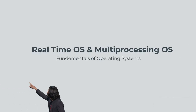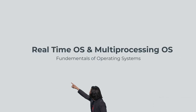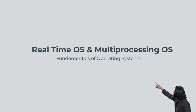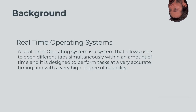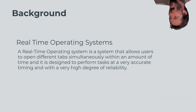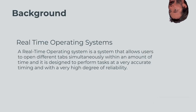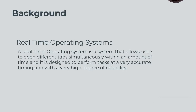Hey guys! I am going to be talking about real-time OS and multi-processing OS. For real-time OS background, a real-time operating system is a system that allows users to open different tabs simultaneously within an amount of time, and it is designed to perform tasks at a very accurate timing and with a very high degree of reliability.